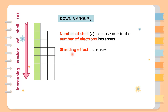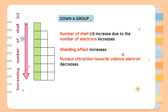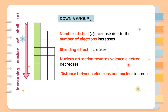Shielding effect is an effect caused by the inner electrons, which will shield and weaken the nucleus-valence electron attractions. Since the nucleus attraction towards valence electrons decreases, the distance between electrons and nucleus will also increase, resulting in a bigger radius down a group. The element at the bottom of a group will have the largest atomic radius due to the weakest electromagnetic nucleus-valence electron attractions.